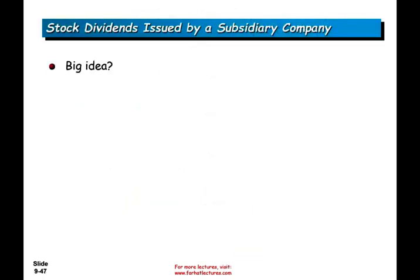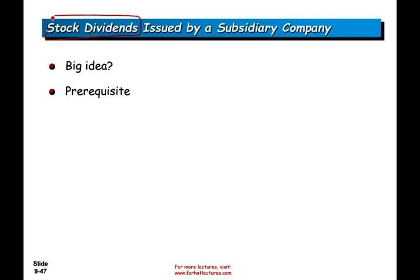So what is the big idea of stock dividend? Stock dividend is when the company doesn't want to distribute cash — they want to conserve their cash. Therefore, rather than paying cash as a dividend, they pay stocks. The basic journal entry is something you have to know from your intermediate accounting. If you haven't learned it before, I strongly suggest going to my intermediate accounting Chapter 16, where I talk in depth about stock dividend.